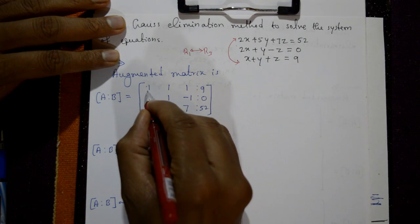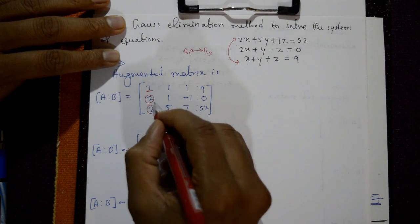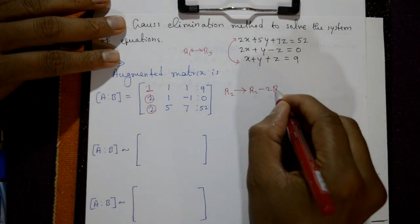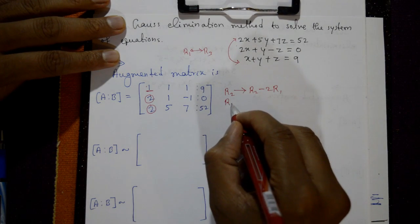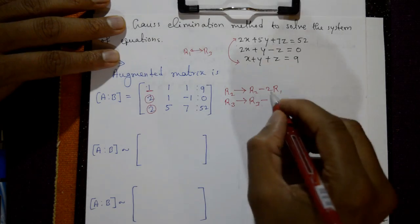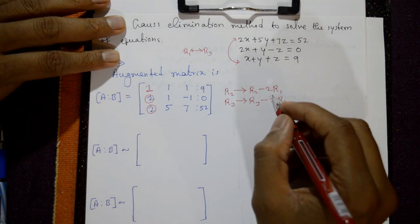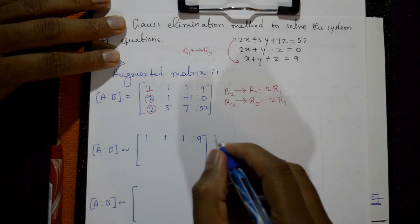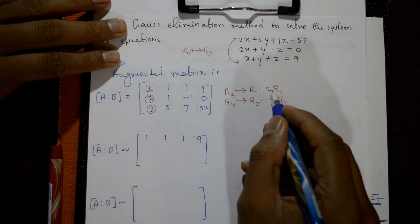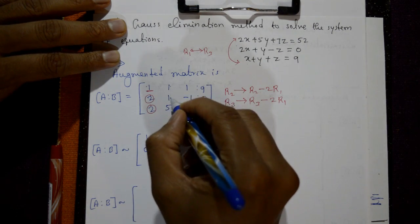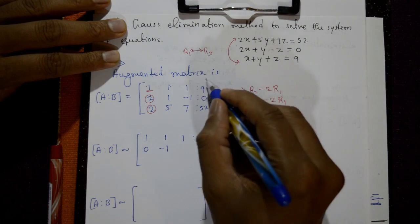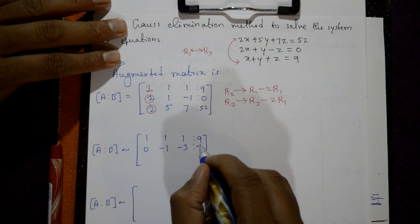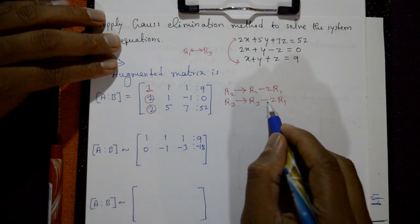The leading number is 1 and the numbers below it are 2 and 2, which we need to make 0. So R2 = R2 minus 2·R1 and R3 = R3 minus 2·R1. Using this row operation, the first row stays as 1 1 1 | 9. Then R2 = R2 minus 2·R1 gives: 0, -1, -3, and 0 minus 18 is -18.